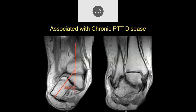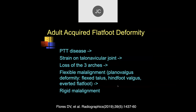This is highly associated with posterior tibialis tendinopathy, so the posterior tibialis tendon is an important structure within the ankle. The longer-standing name for this condition is adult acquired flat foot deformity. The concept is: first you get posterior tibialis disease and it no longer becomes functional. You then get strain on the talonavicular joint and start losing the three arches as you strain the ligaments. In the early stages it can be flexible, which some call planovalgus deformity.